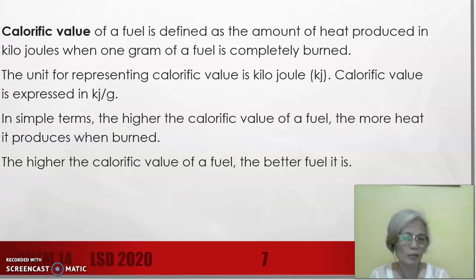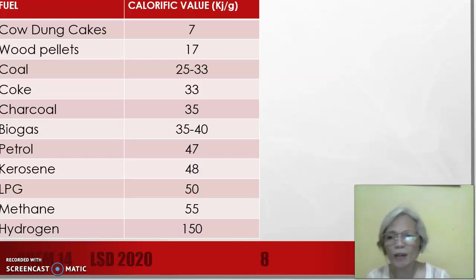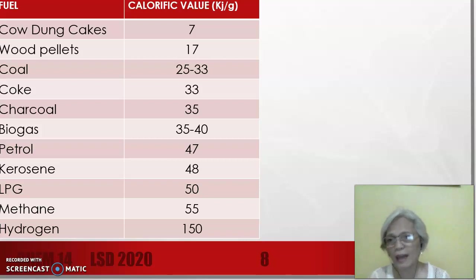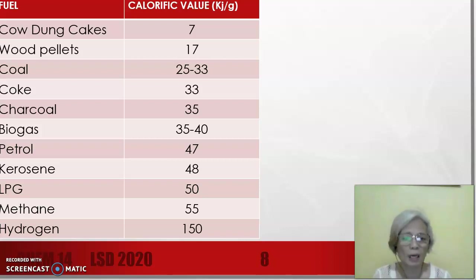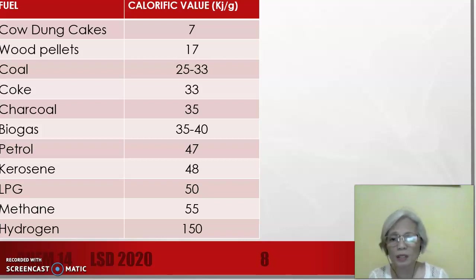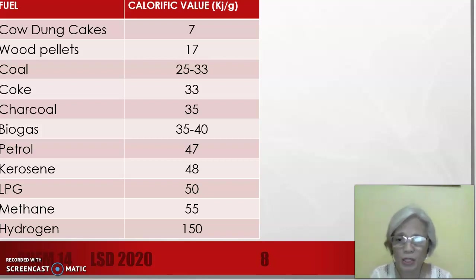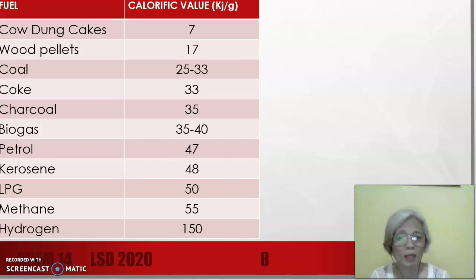Here is the definition of calorific value along with a comparison of calorific values of some fuels — solid, liquid, and gas. Cowdung cakes have the lowest calorific value — yung cowdung, yung mga manure ng baka na ginagawang pabilog at ginagawang fuel — at 7 kilojoules per gram. Wood pellets are at 17. LPG used at home is around 50 kilojoules per gram, petrol at 47, and kerosene at 48. Notice that hydrogen has the highest calorific value at 150 kilojoules per gram.